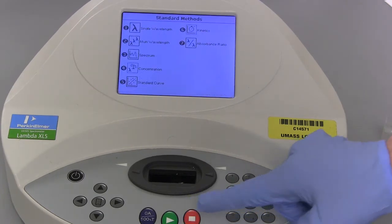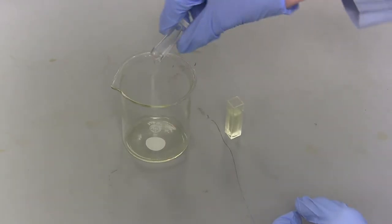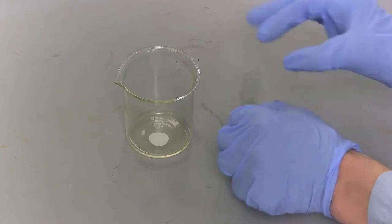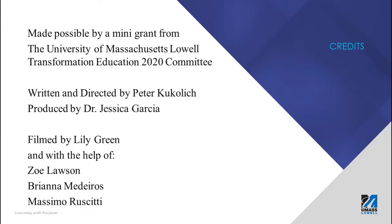Record the wavelengths and absorbance for each peak. When all the samples are analyzed, press the red button twice to return to the main menu. To finish, empty vials into the proper waste container and clean them with solvent. Thank you for watching. This video is made possible by a mini-grant from the University of Massachusetts Lowell Transformational Education 2020 Committee.